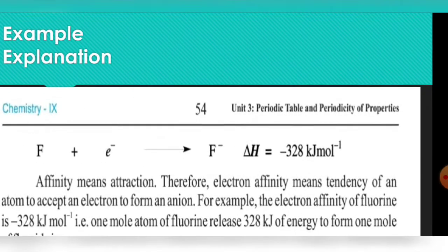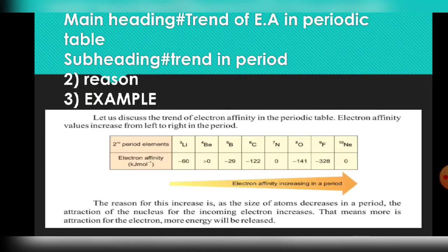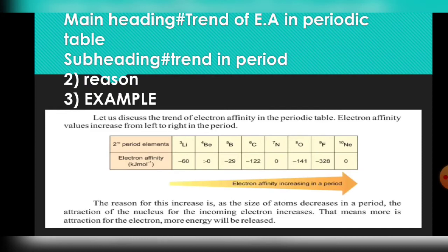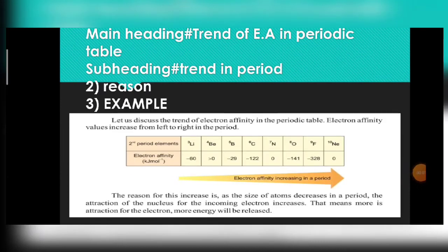The next main heading is the trend of electron affinity in the periodic table. Electron affinity values increase from left to right in a period. The reason is that the size of the atom decreases as we move left to right, resulting in more attraction force between the outer shell electrons and the nucleus. When we add an electron, the nucleus attracts it more strongly and more energy is released.